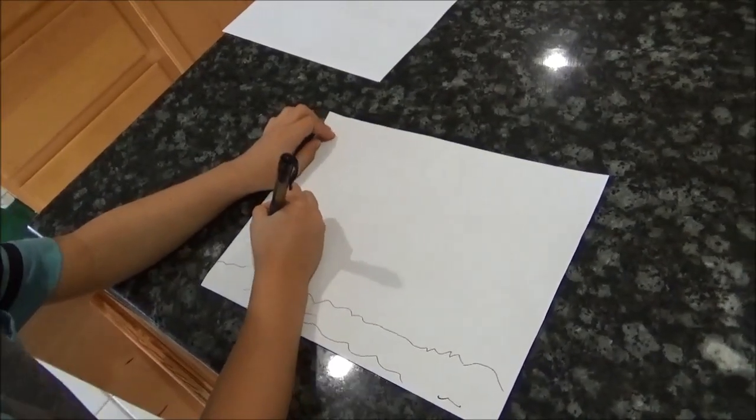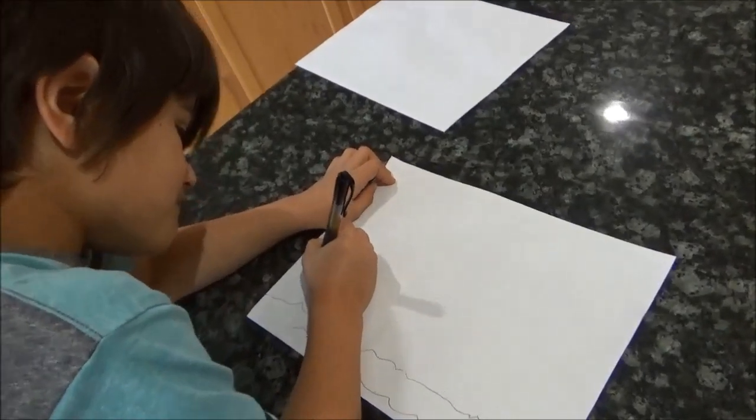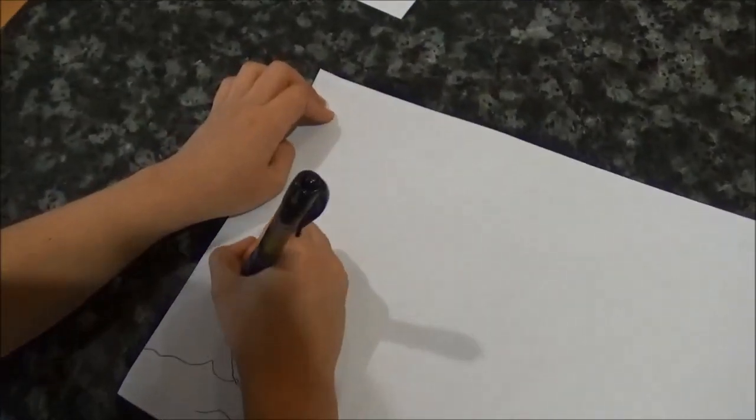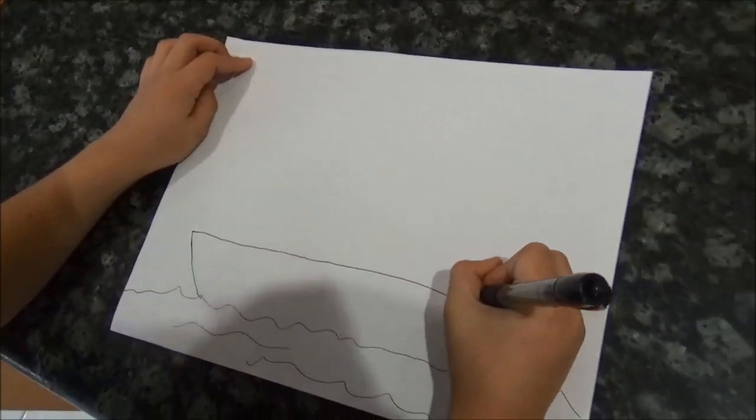The next step, we have to draw a circle like that. Look at the circle. Circle or like a curved line. I see the curved line.